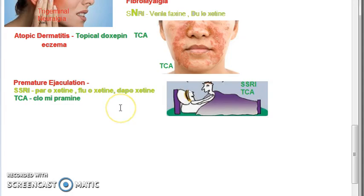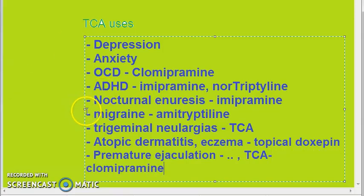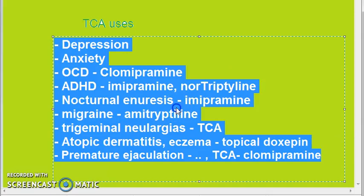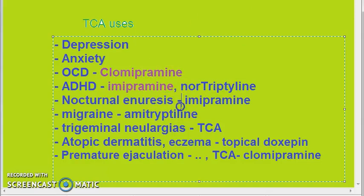For premature ejaculation, you can use clomipramine. SSRIs are actually preferred first, followed by tricyclic antidepressants like clomipramine. The TCA drugs mentioned across all uses are: clomipramine, imipramine, amitriptyline, doxepin, and clomipramine and imipramine repeat across multiple uses.